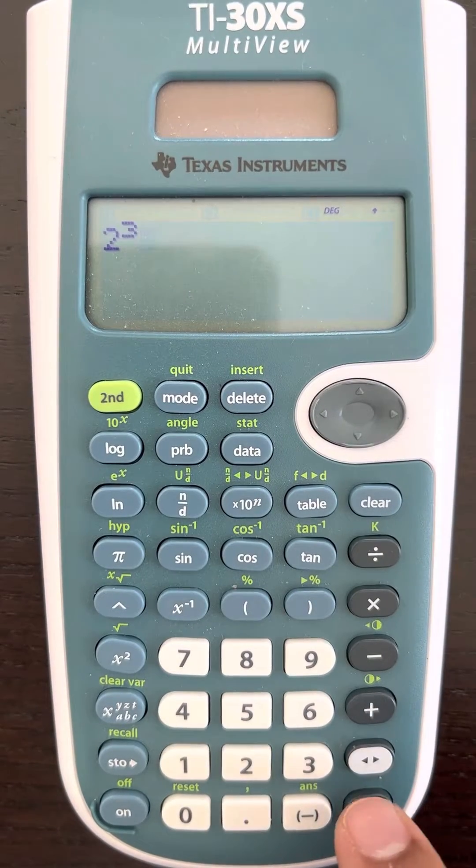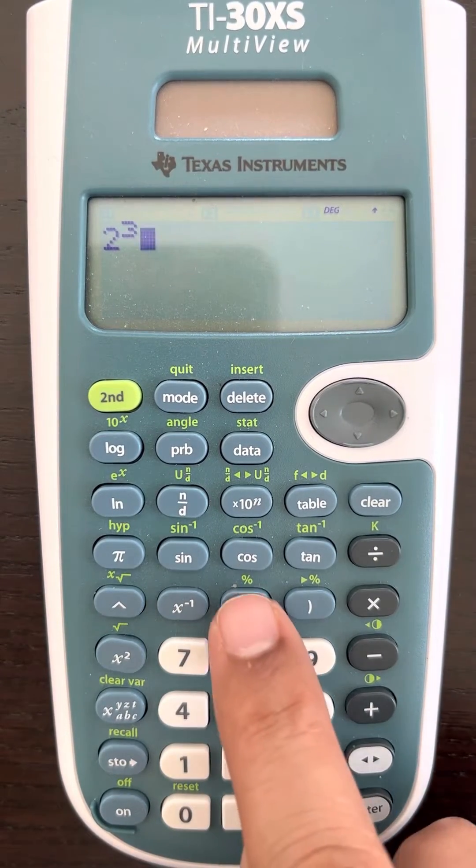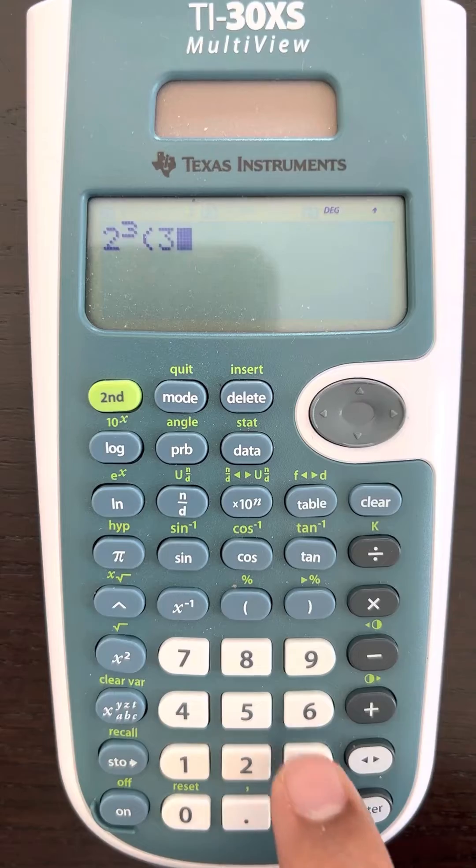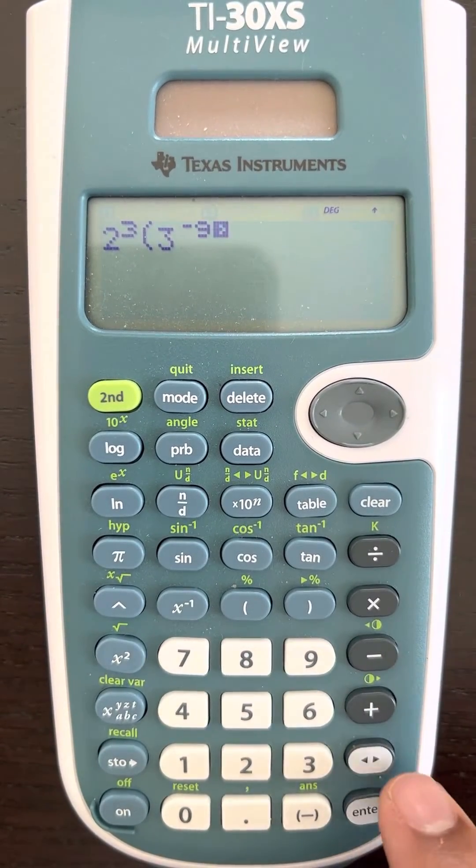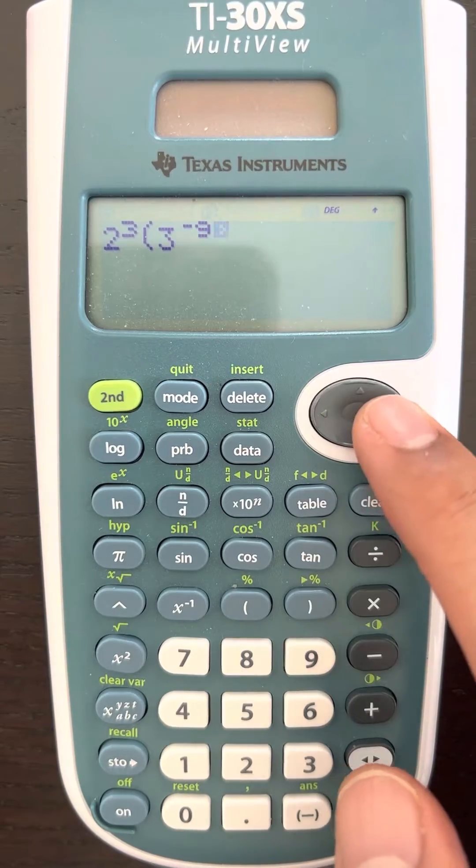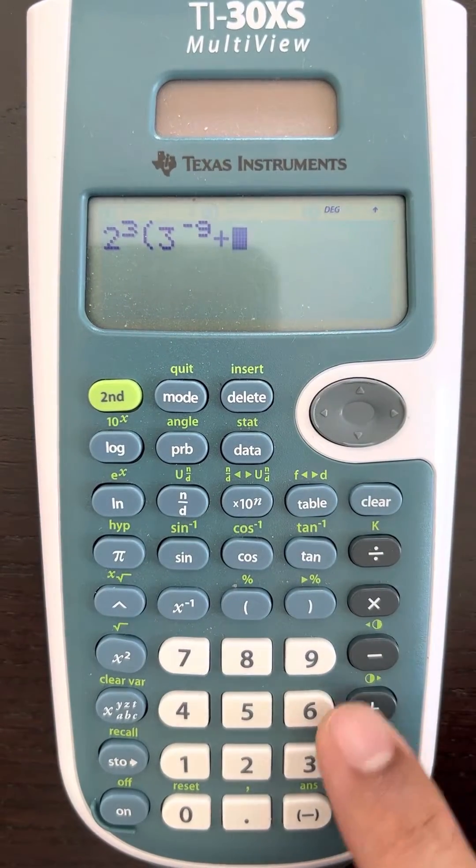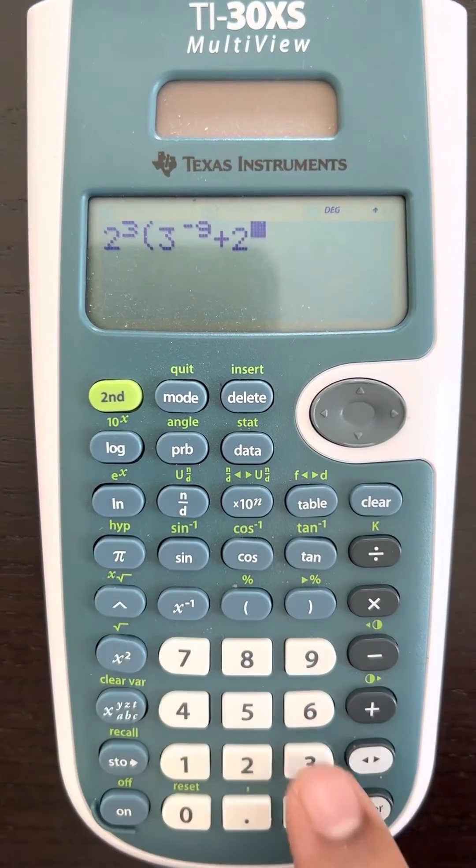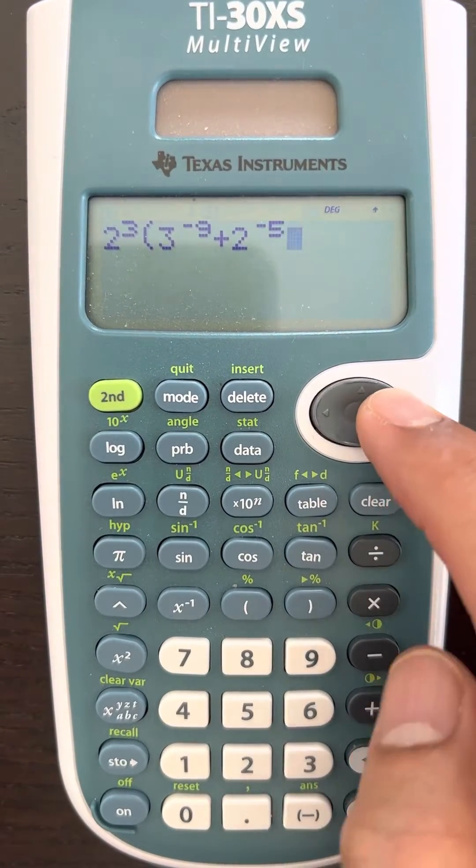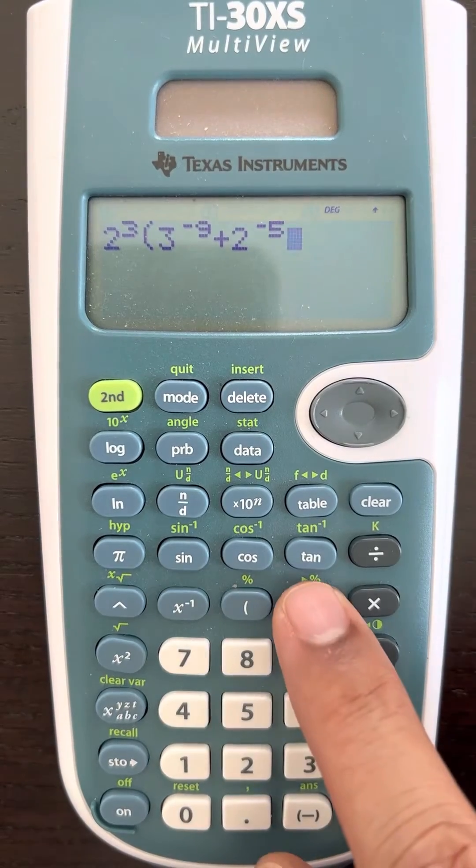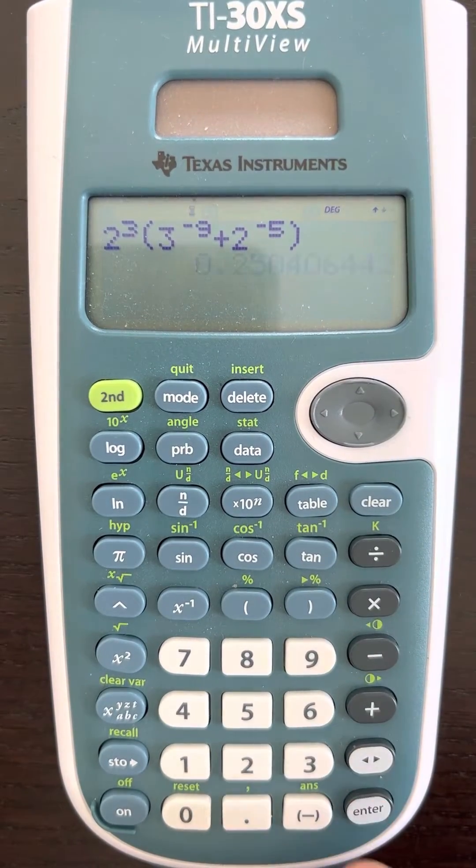Now the cursor has come down. I have bracket 3 raised to the power minus 9, and then to bring the cursor down I do this. Plus 2 raised to the power minus 5, and to bring the cursor down again, press enter.